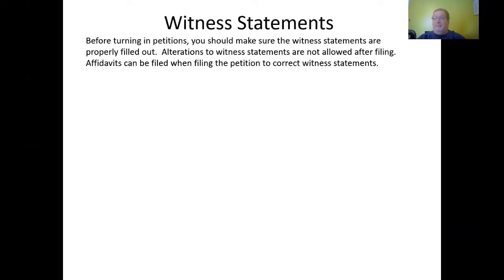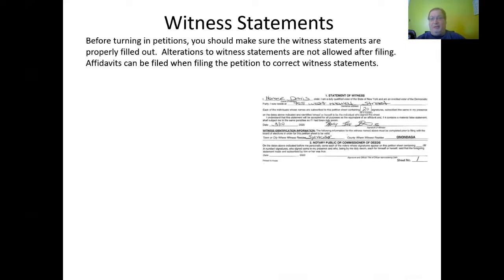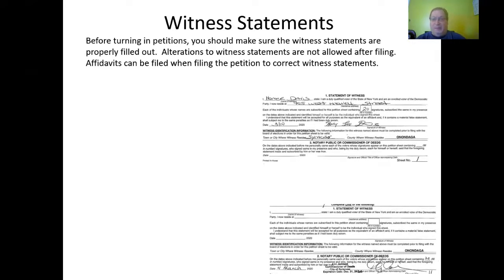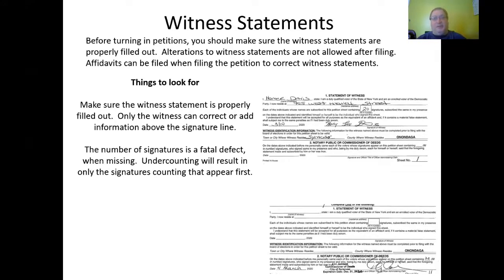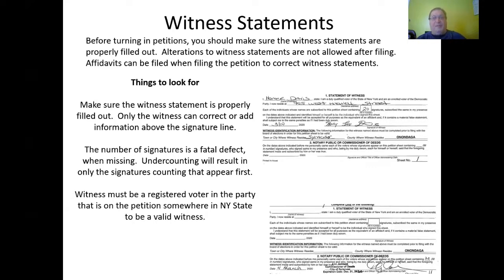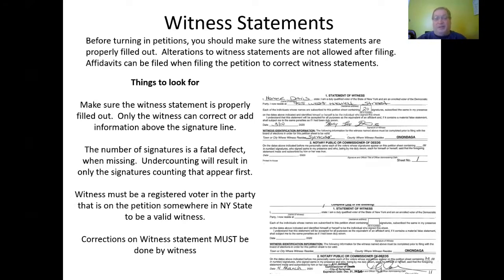Witness statements: before turning in petitions, you should make sure the witness statements are properly filled out. Alterations to witness statements are not allowed after filing. Affidavits can be filed when filing the petition to correct witness statements. Only the witness can correct or add information above the signature line. The number of signatures is a fatal defect when missing. Undercounting will result in only the signatures counting that appear first. Witnesses must be a registered voter in the party somewhere in New York State to be a valid witness. Corrections on witness statements must be done by the witness.